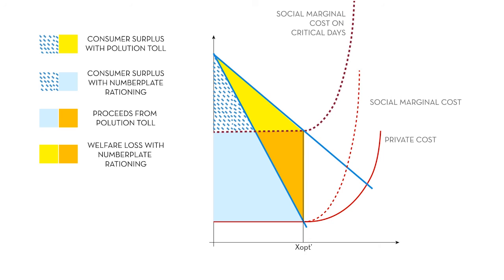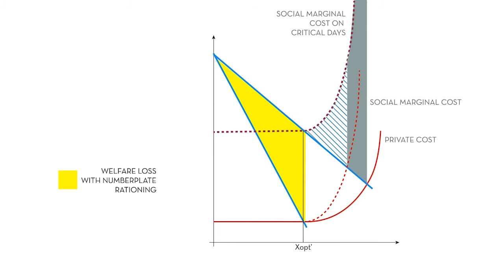So, to sum up, let's compare all options. If we look at the diagram, we see that in all probability, the worst thing we can do is to do nothing. If we have a congestion toll in place, then the social loss on extreme days will be a lot smaller. Probably, this solution is better than trying to do something like number plate rationing.